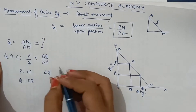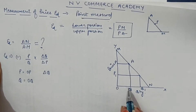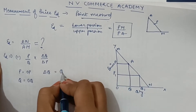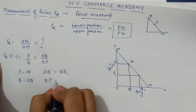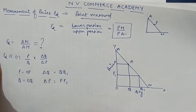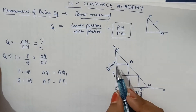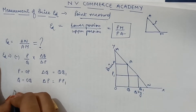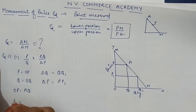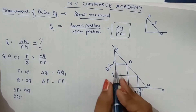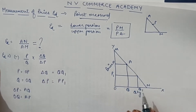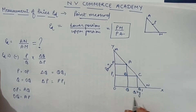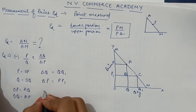Next comes ΔQ, that is change in quantity. Quantity changed from OQ to OQ1, so the change was QQ1. And ΔP, that would be PP1. If we look at the diagram, OP is equivalent to AQ. Similarly, OQ is equivalent to AP. And QQ1 is the same as BC, and PP1 is equal to AB.